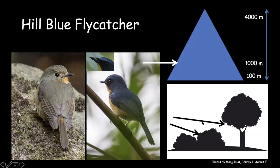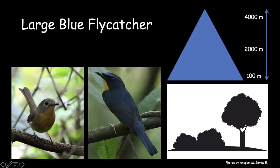Hill blue flycatcher usually prefers bamboo habitat and dense undergrowth. If birding around 600–700 meters in the Mishmi Hills, such as near health tourism camp, hill blue flycatcher is one of your first birds. When separating them from large blue flycatcher, also look at primary projection — it is medium in hill blue flycatcher and much longer in large blue flycatcher. The large thick bill and very contrasting rufous face-to-chest coloration stand out in the large blue flycatcher.